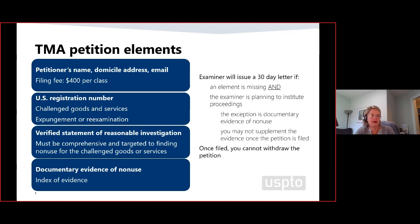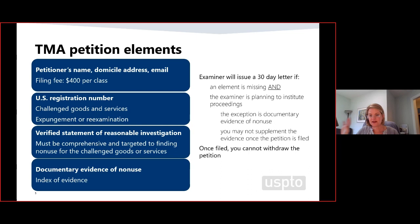Be really clear about the specific goods and services you are challenging. We've had cases where a petition identifies all the goods and services in a class, but the evidence only goes to one of those items. So be clear which goods and services your evidence is providing the non-use prima facie case for. Once the petition is filed, there is no withdrawal available. So if the prima facie case is made in that petition, the director must institute. Consider that.